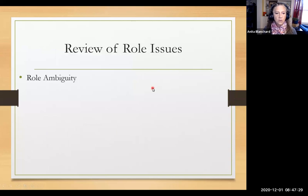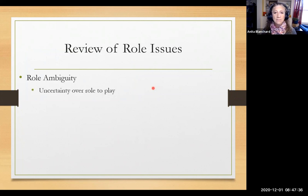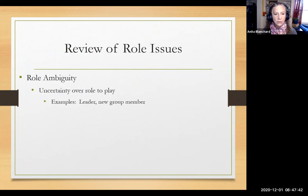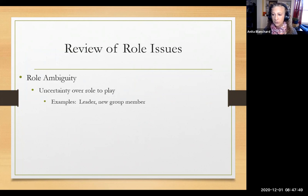Review of role issues. We've been talking about roles a lot because this is where they all come in. Role ambiguity — we saw that in job satisfaction and stress. In groups: what am I supposed to do? Uncertainty about how to perform, especially if you're a leader or new group member. That's role ambiguity within groups. It causes stress and dissatisfaction.